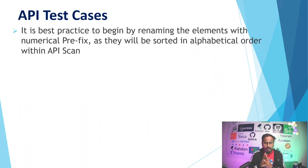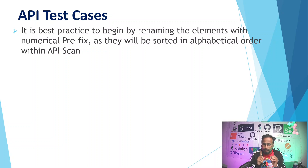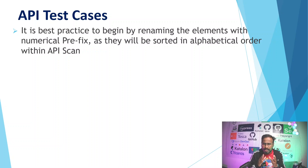It is best practice to begin by renaming the elements with a numerical prefix, as they will be sorted in alphabetical order within API scan. I have already explained this in my previous session, but let me show you again.